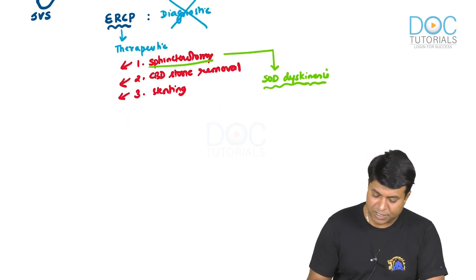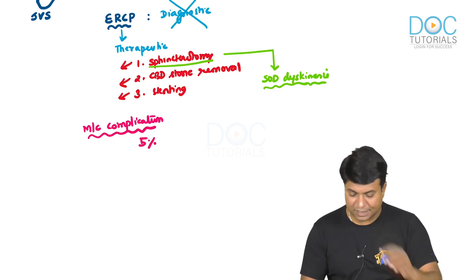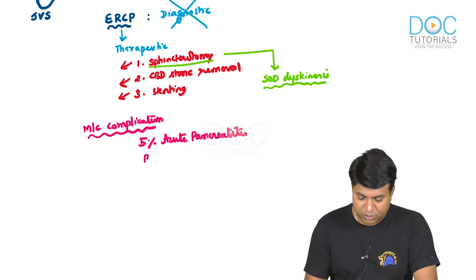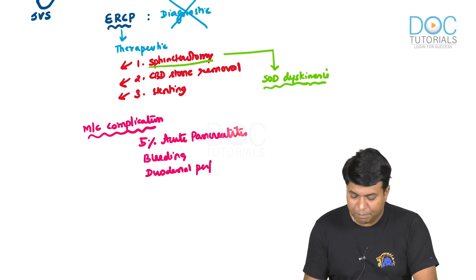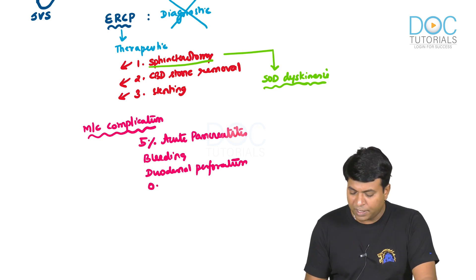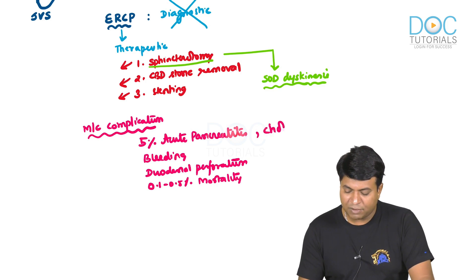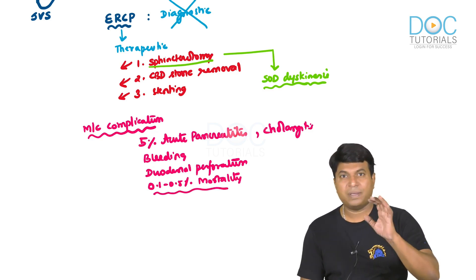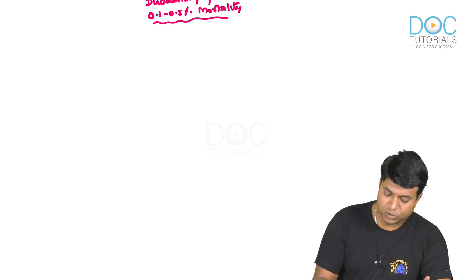ERCP is an invasive procedure with significant complications. The most common complication is ERCP-induced acute pancreatitis, occurring in 5% of cases. Other complications include bleeding, duodenal perforation, and cholangitis — with 0.1 to 0.5% of patients potentially dying from cholangitis following ERCP. ERCP related to sphincterotomy is a very important MCQ topic for your exams.